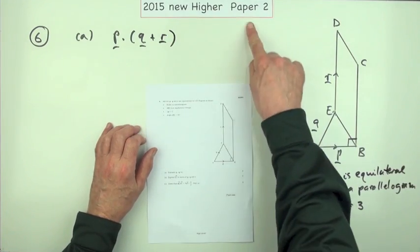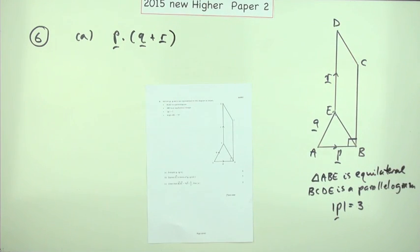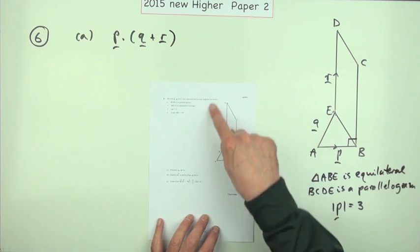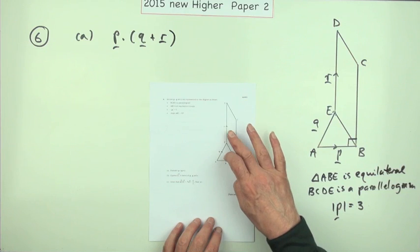Question 6 from Paper 2 of the 2015 New Higher. It's a seven mark question, actually fairly straightforward even though that diagram might look a bit scary to begin with.